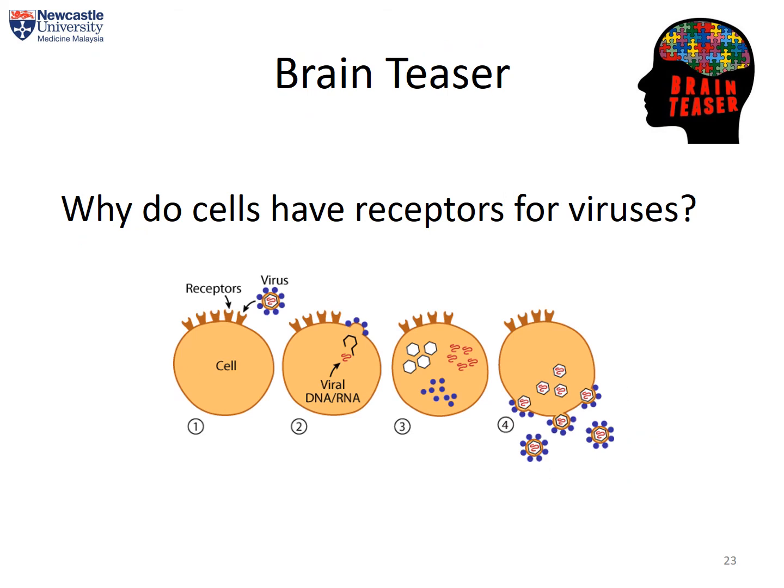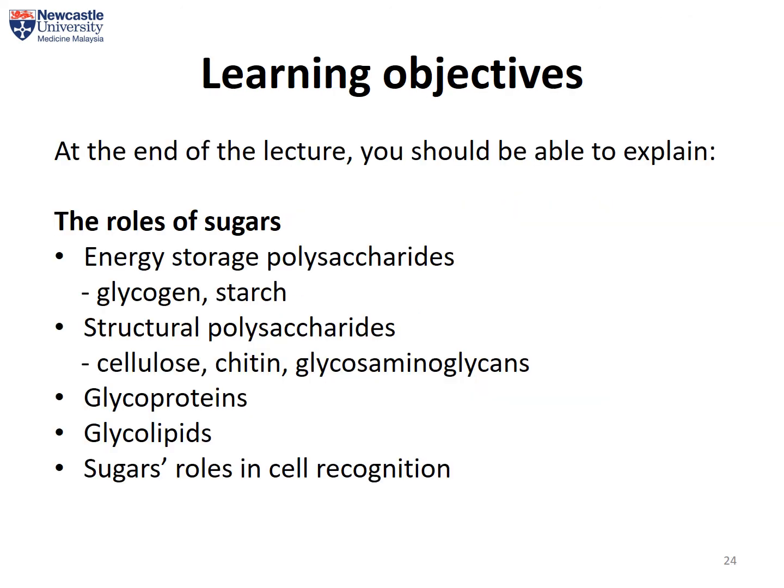Here is a brain teaser: why do you think cells have receptors for viruses in the first place? With that we have come to the end of this lecture. You should now know the multiple roles played by sugars in biology, such as forming energy storage polysaccharides, acting as structural polysaccharides, and most importantly helping in cell recognition.